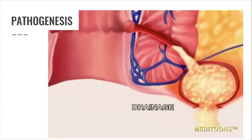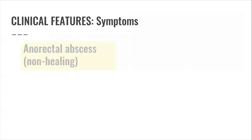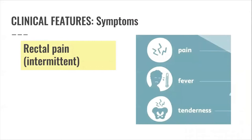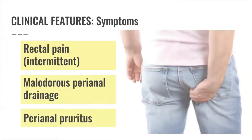The clinical features or manifestations in a patient include anorectal abscess, purulent discharge, and pustule-like lesion. Patients may also present with rectal pain, malodorous perianal drainage, and perianal pruritus.